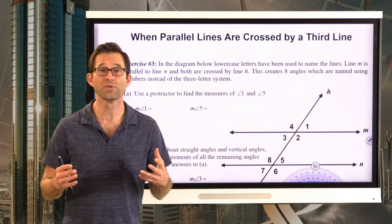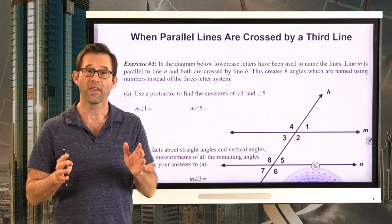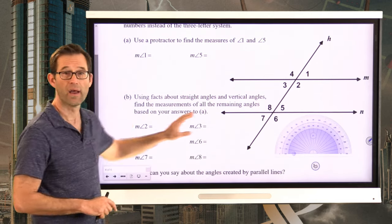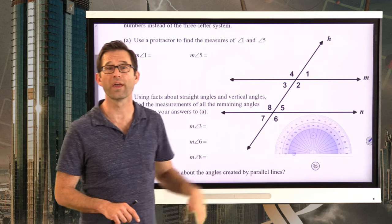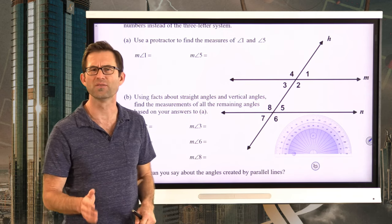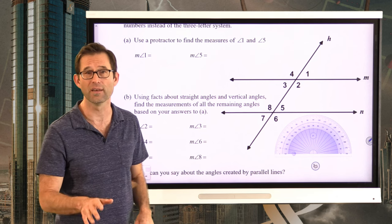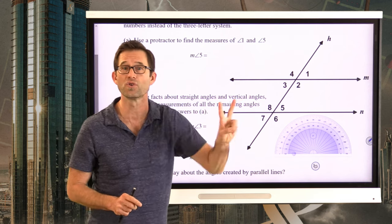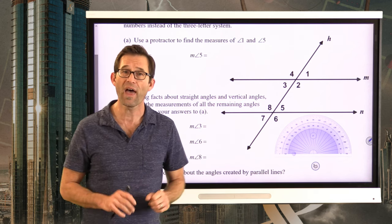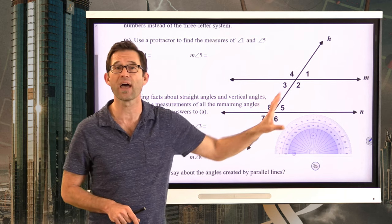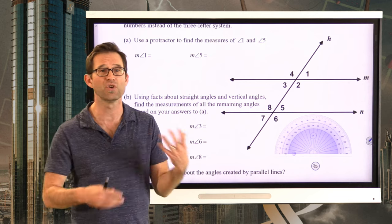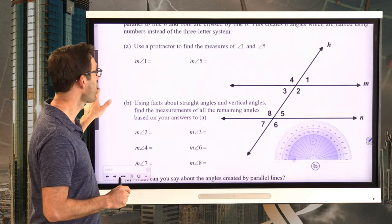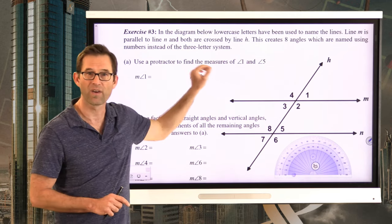Maybe the most important thing about parallel lines is when they get crossed by a third line. When a third line crosses two parallel lines, that third line is what's called a transversal. To transverse means to walk across — a transversal is a line that crosses two parallel lines. When that happens, eight angles are formed. I've got those angles numbered to make our lives easier so we don't have to use three-letter naming systems.